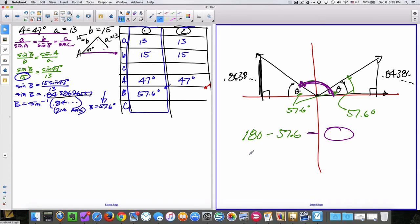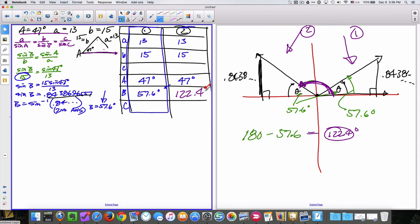This angle measure is 57 degrees, and this angle measure is going to be 180 minus the 57.6, because the reference angles are both 57.6 degrees. This purple angle measure is actually 122.4. So this triangle here is triangle number one, this triangle over here that has this angle is triangle two.